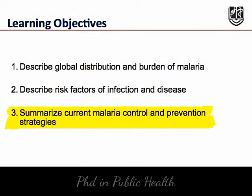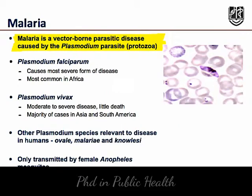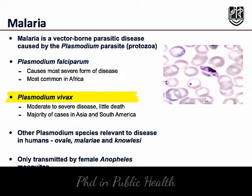This lecture will describe malaria as a disease and summarize current malaria control and prevention strategies. Malaria is a vector-borne parasitic disease caused by the Plasmodium parasite. Plasmodium falciparum causes the most severe form of the disease and is most common in Africa. Plasmodium vivax causes moderate to severe disease, although little death, and the majority of cases are in Asia and South America.